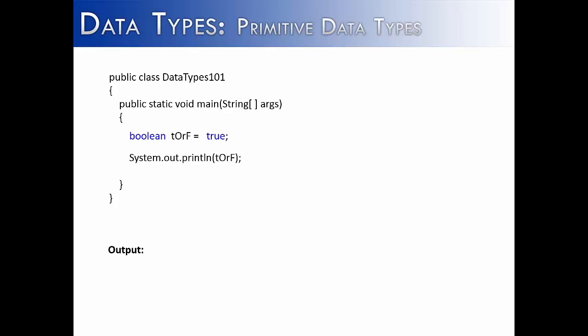This is what it would look like in a programming environment. So if I had a variable called t or f, and it was a Boolean value, I could assign it to true, and then when I printed it out, it would look something like this. It would say the word true. I could also assign the value false, and when I printed it out, it would print out false.